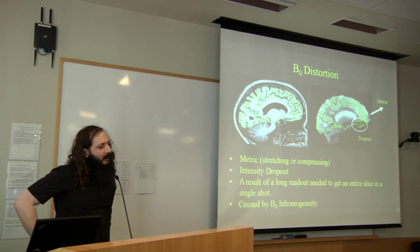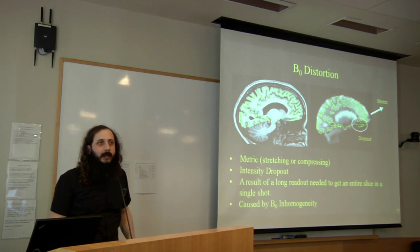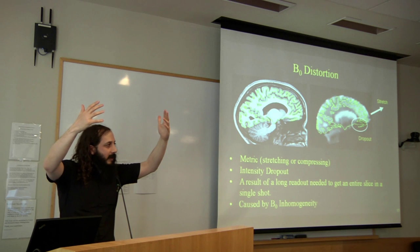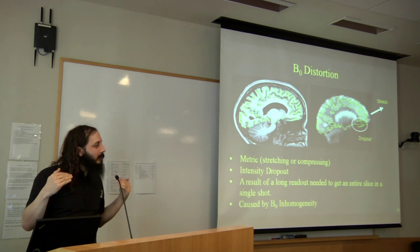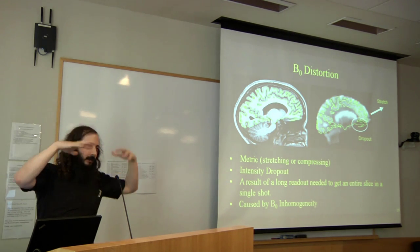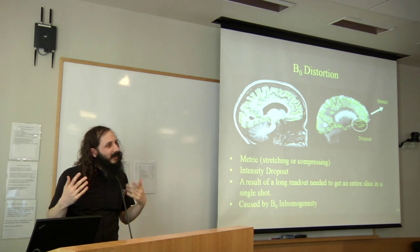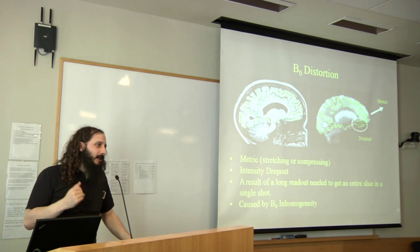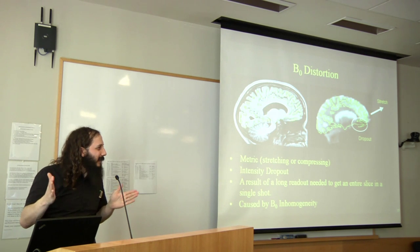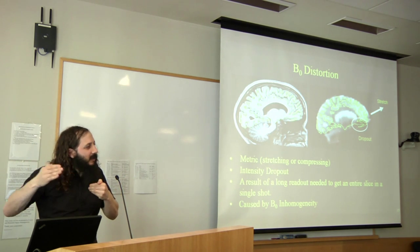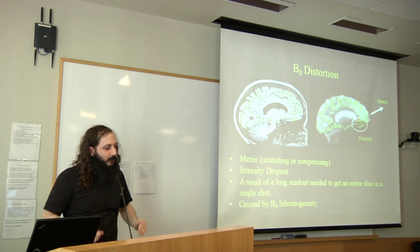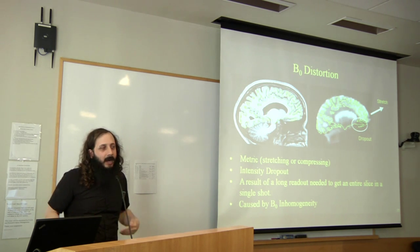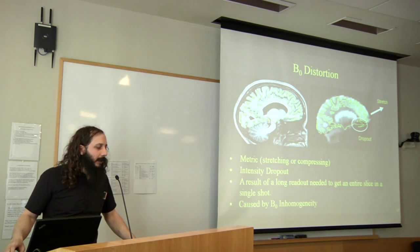The next pre-processing step addresses B0 distortion, also known as macroscopic susceptibility distortion. The brain has different magnetic susceptibilities; when placed inside a 3 Tesla scanner, these susceptibilities contribute to the magnetic field and add local magnetization. This interferes with gradient encoding, causing geometric distortion and signal dropout in EPI images. EPI images are acquired over a 60-70 millisecond period, so these phase errors can cause B0 distortions — specifically a stretching along the phase encoding direction, caused by brain-induced B0 inhomogeneity.